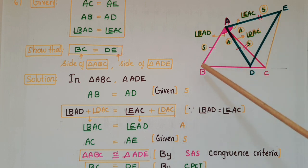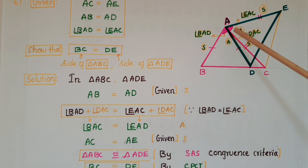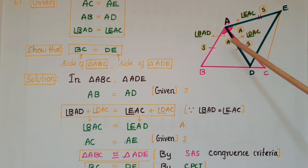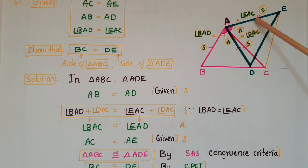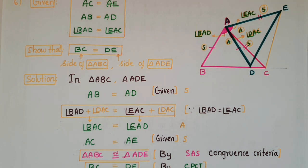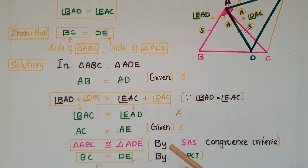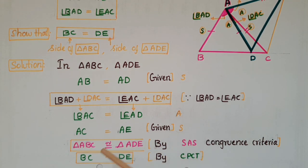So we can say that triangle ABC is congruent to triangle ADE, because side, angle, side of this triangle are equal to side, angle, side of this triangle. These two triangles are congruent. Once these two triangles are congruent, we can equate the corresponding parts of these two triangles. So BC is equal to DE.